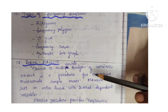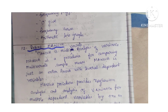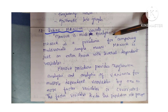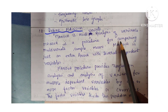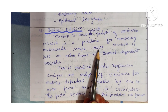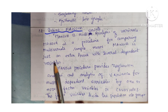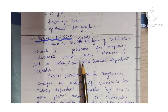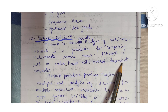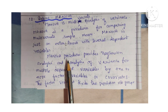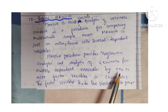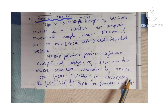Define MANOVA. MANOVA means multivariate analysis of variance. MANOVA is a procedure for comparing multivariate sample means. It is just an extension of ANOVA — an extension of ANOVA with several dependent variables. MANOVA provides regression analysis and analysis of variance for multiple dependent variables by one or more factor variables or covariates. The factor variables divide the population into groups.